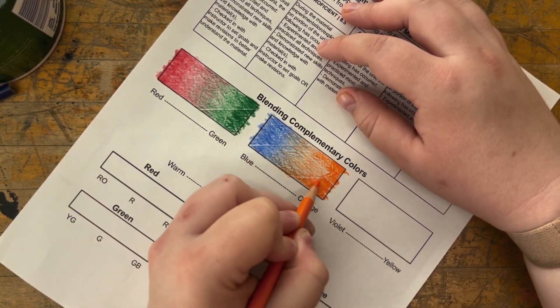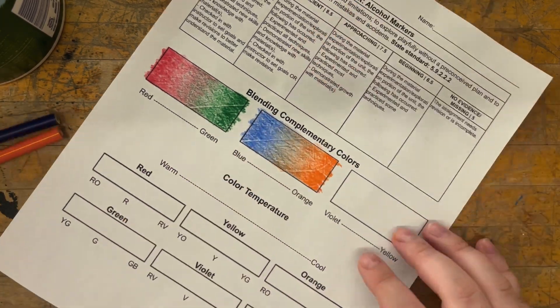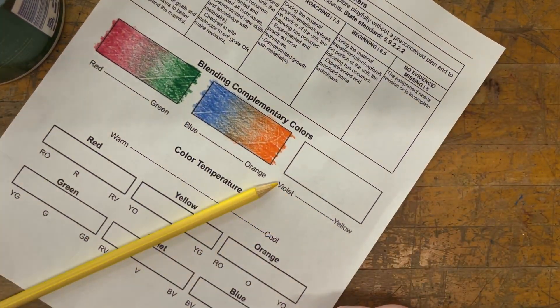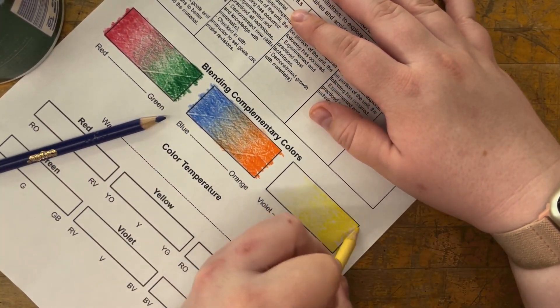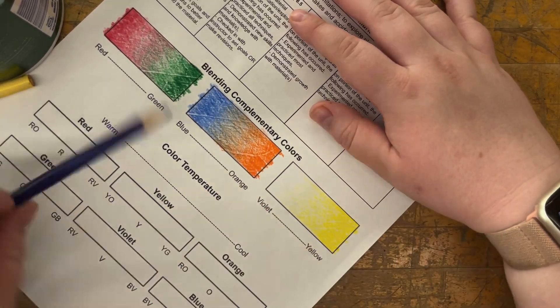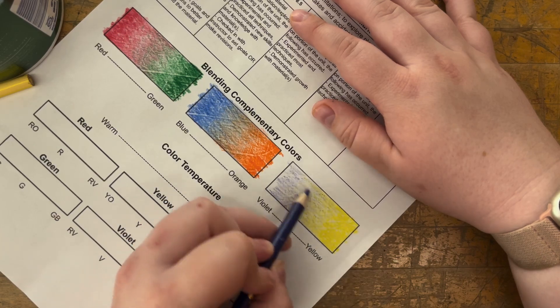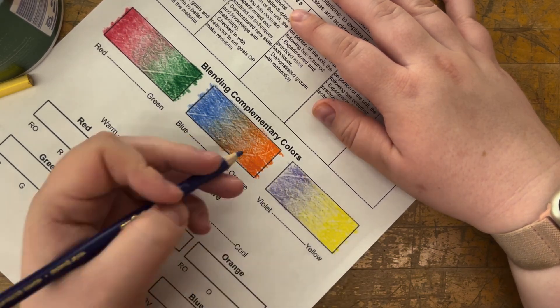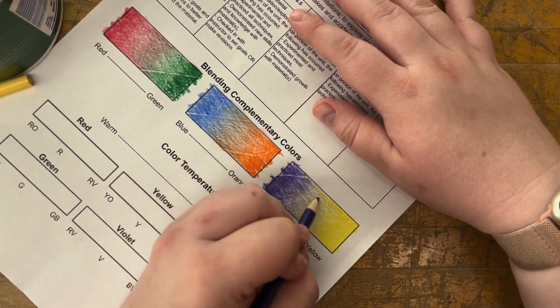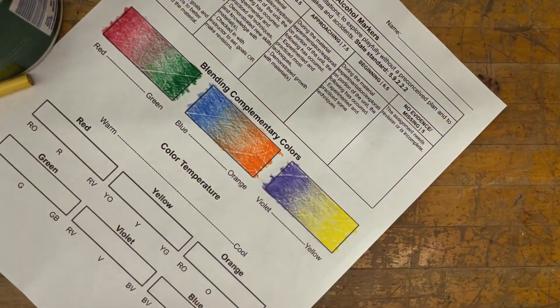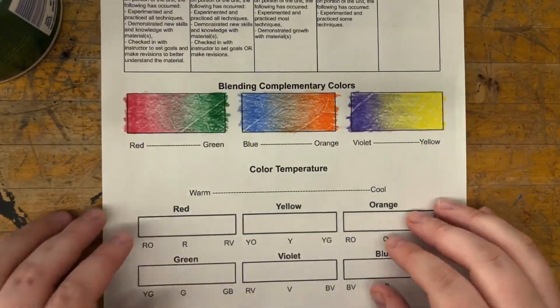One question I usually get from students is which color to start with first. For most of them, it doesn't matter too much as long as you're starting with that base layer, that midway pressure, and then continuing to build up or gradiate your pressure from there. That said, the one color exception with that, I would say yellow, usually always do first as your base layer. It's not really good as an overlap on any of the other colors.